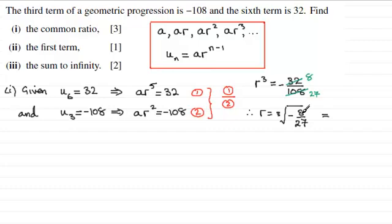And that is the same as cube rooting top and bottom. The cube root of 8 or minus 8, it doesn't matter which way you look at it, is going to be minus 2. And the cube root of 27 is 3. So you end up with that common ratio then equaling minus two thirds. Okay.